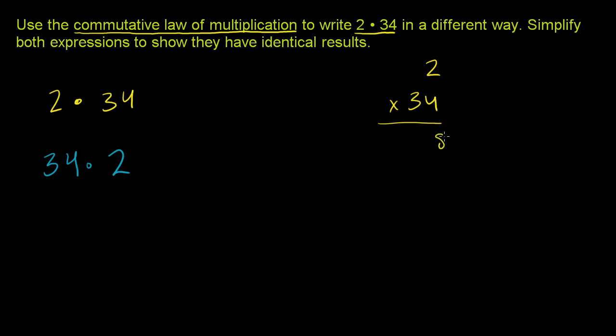4 times 2 is 8. And then we'll put a 0. 3 times 2 is 6, or you could view it as 30 times 2 is 60. Add them together. 8 plus 0 is 8. 6, bring it down. It's not being added to anything. You get 68.